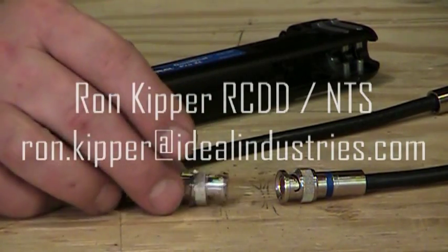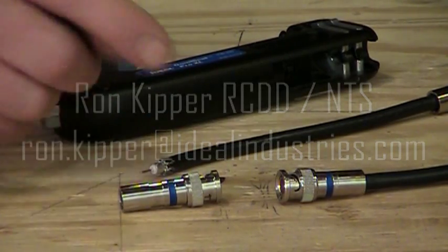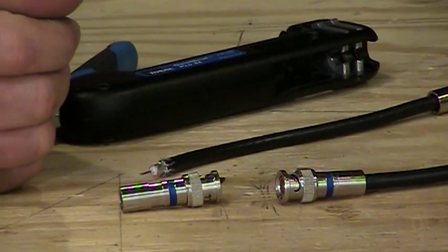What we have here are some BNC compression style coax connectors that are designed for RG6 wire that we're going to put on a piece of RG6 coax.